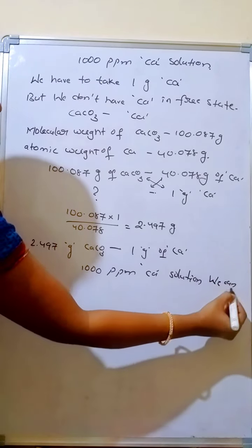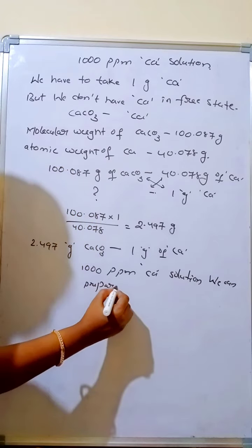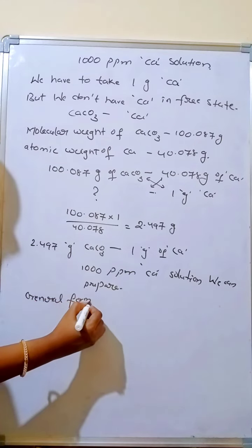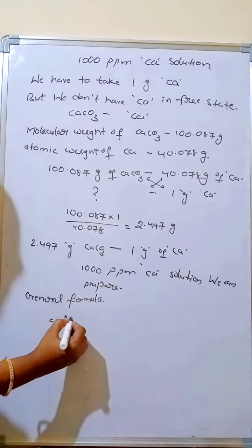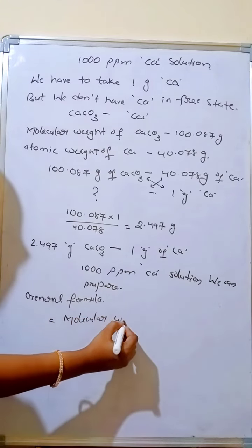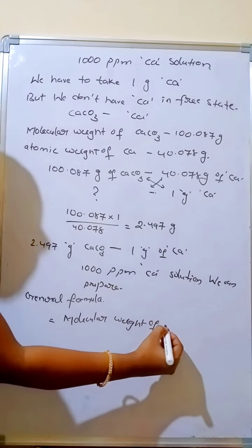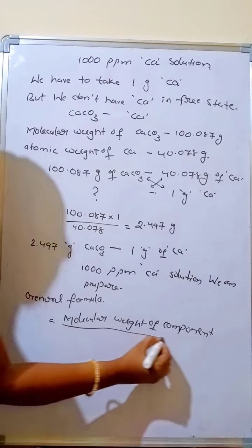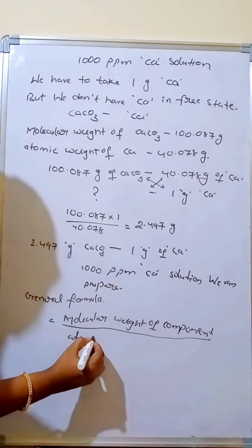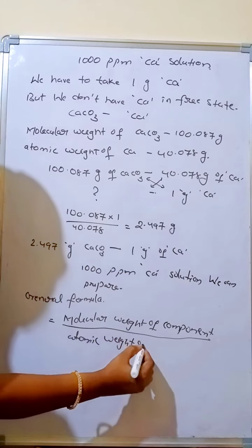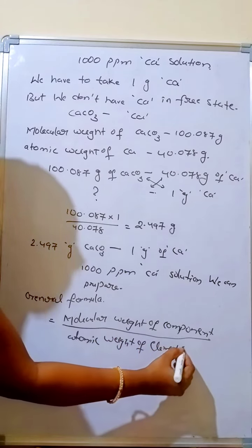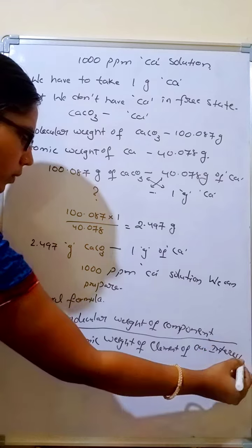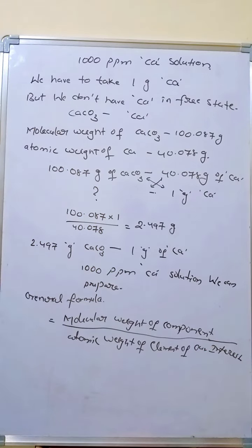Now we need a general formula to calculate weight of the component for any element to prepare 1000 ppm solution. That is molecular weight of component divided by atomic weight of element of our interest. So our interest means whatever the element we want to prepare, we have to take that. This is the calculation.